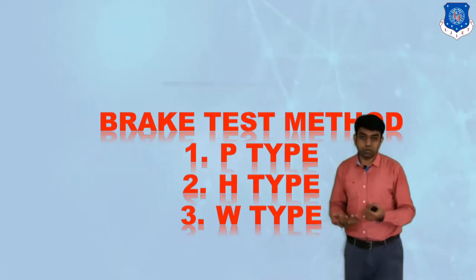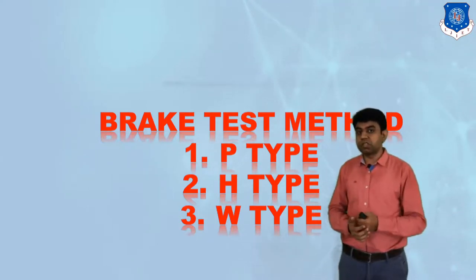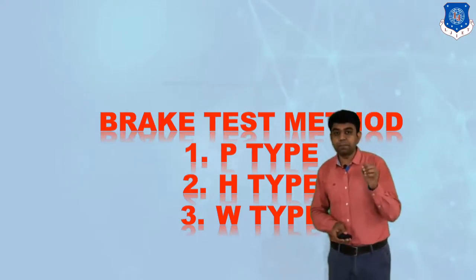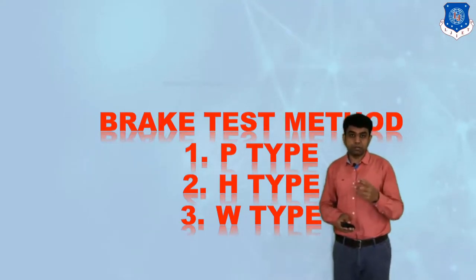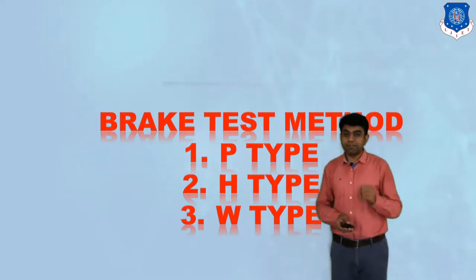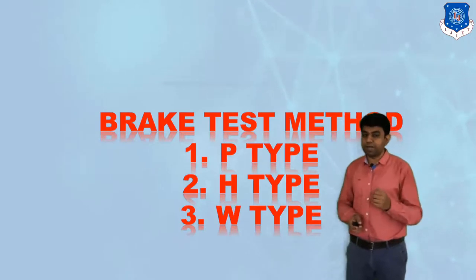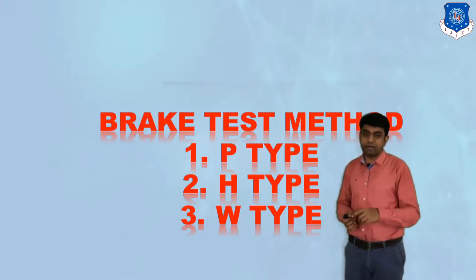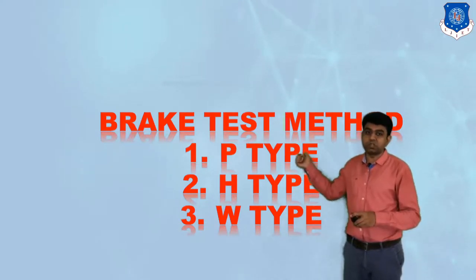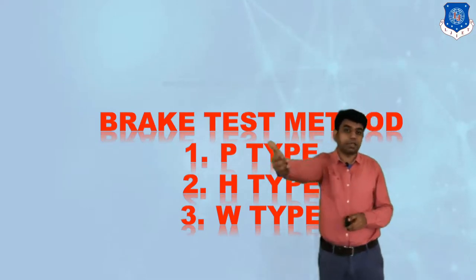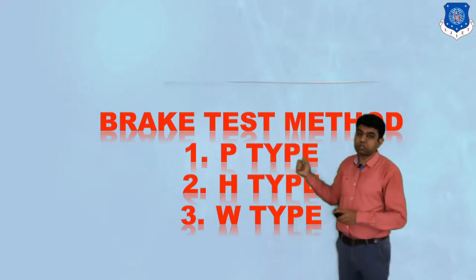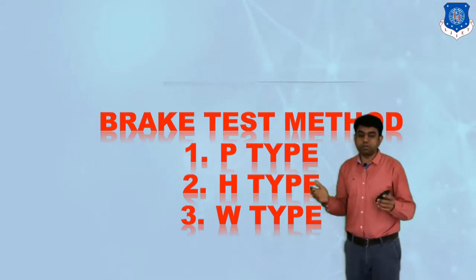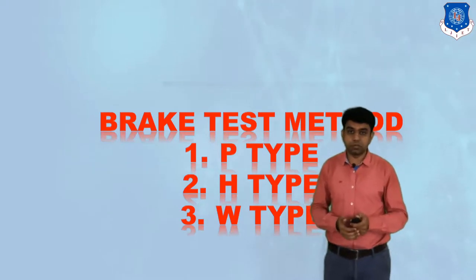The third type is the W-type, also called the water type test. In this test, water is sprinkled on the brake surface, while the track is kept dry. We apply the brake fifteen times, repeatedly after every two minutes of travel. When you apply the brake for the first time, stopping distance and stopping time should be at least sixty percent of the P-type test values. By the end of the fifteenth application, the braking should recover to at least ninety percent of the P-type test, regaining the performance of stopping distance and stopping time. If this is not achieved, corrections to the braking system are required.